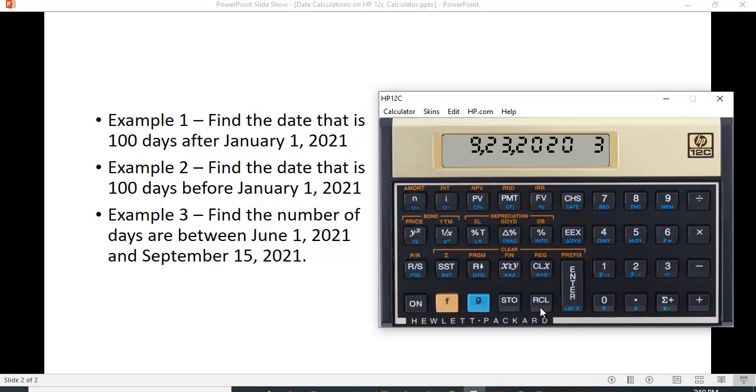And let's find the number of days between June 1, 2021, and September 15th of 2021. So let's see how we do this one. It's 6.01.2021, enter, 9.15.2021, and we're going to go with the delta days, so that's right here, and we get 106 days.